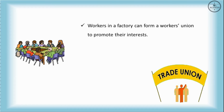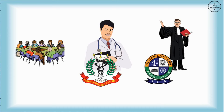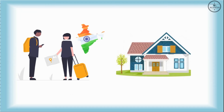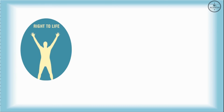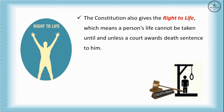Citizens can also form associations. For example, workers in a factory can form a workers' union to promote their interests. Various professionals like doctors, businessmen, and lawyers make their own associations to promote their interests. Every citizen has the right to travel to any part of the country and reside anywhere as well. The Constitution also provides the right to practice any profession of one's choice. Moreover, the right to life means a person's life cannot be taken unless a court awards the death sentence.